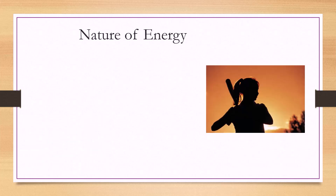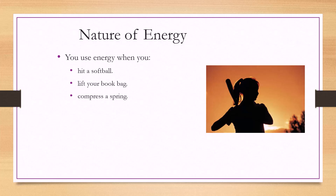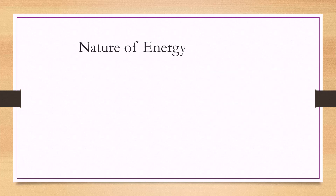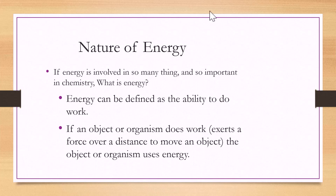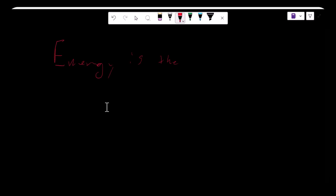You use energy when you hit a softball, when you lift up a book bag, or when you compress a spring. If energy is involved in so many things and is so important in chemistry, what is energy? Energy can be defined as the ability to do work. If an object or organism does work — meaning that it exerts a force over a distance to move an object — the object or organism uses energy.